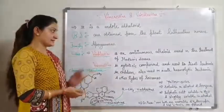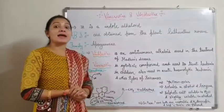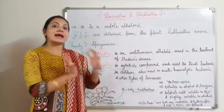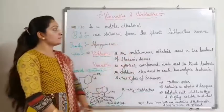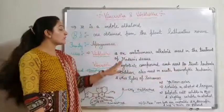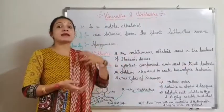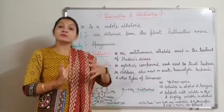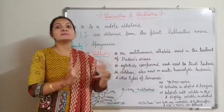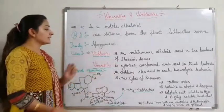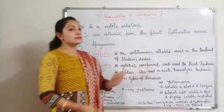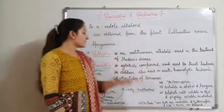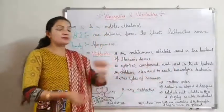Now, the uses: first we see the uses of Vinblastine. Vinblastine is an anti-tumor alkaloid used in cancer treatment. It is used in the treatment of Hodgkin's disease, which is a type of cancer arising in the lymphatic system and affecting the immune system of our body. Vinblastine is also a cytotoxic compound used in the treatment of leukemia in children.